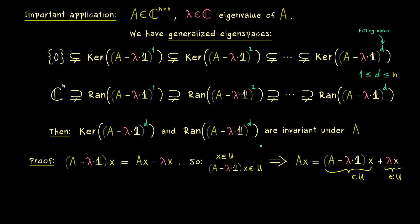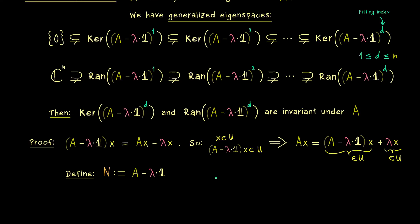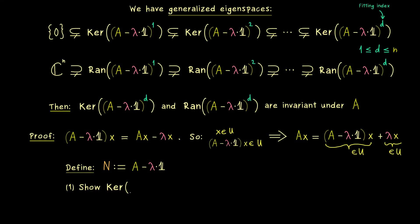So we can check the invariance of the subspace by simply checking for A minus lambda times identity instead of A. This makes our whole proof here much simpler, because if we substitute this matrix by the letter N, then all the notations are much shorter.